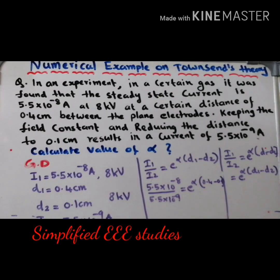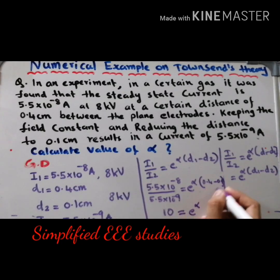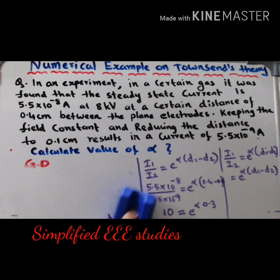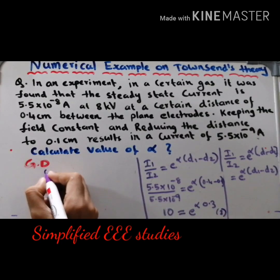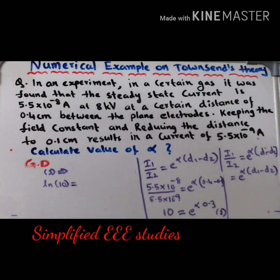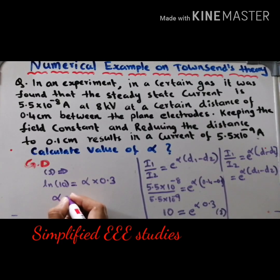We have 10 = e^(α × 0.3). Taking the natural logarithm on both sides: ln(10) = α × 0.3, using the identity ln(e^x) = x. Therefore, Townsend's primary ionization coefficient alpha = ln(10) / 0.3.